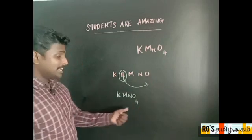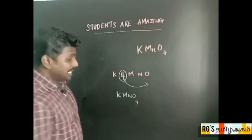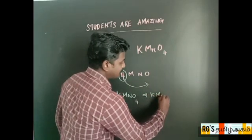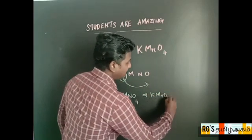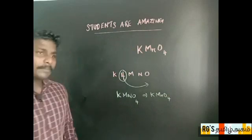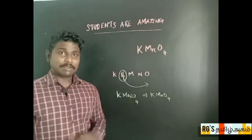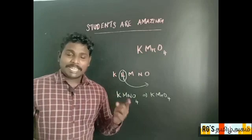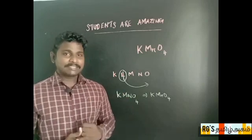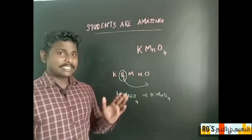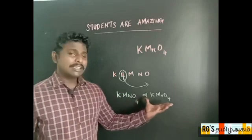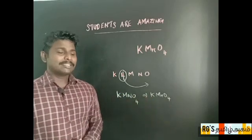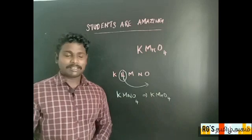So the formula becomes K, Mn, O, 4 — that is KMnO4. It is a method to remember the potassium permanganate formula in an easier way. I was admiring the kids — their names are Namviya Street and Pranavi. These kids gave an idea that this is also a method to remember the formula of molecules.